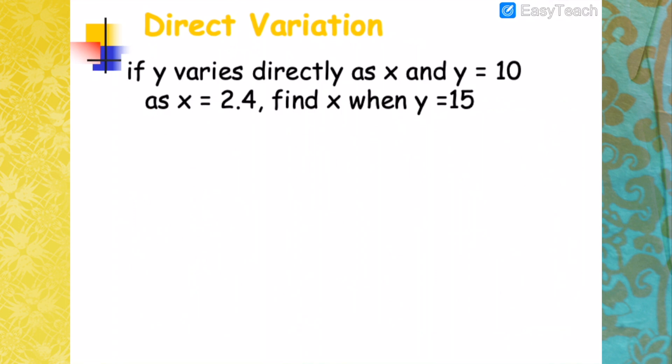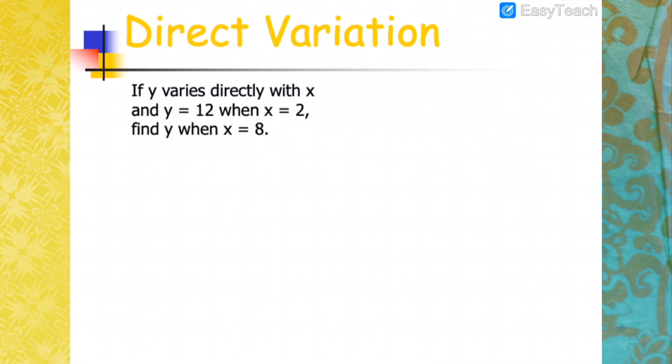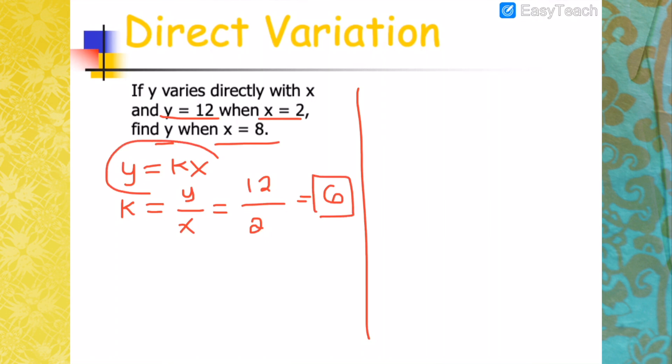Let's do another one. If Y varies directly with X and Y equals 12 when X is 2, find Y when X is 8. So again, you have two ways that you can do this. Either you solve first for K. So Y equals KX because Y varies directly as X. Rearranging this to get K, that will be Y over X. Substitute Y is 12 when X is 2. So dividing 12 by 2, you will get 6. That means 6 is your K.